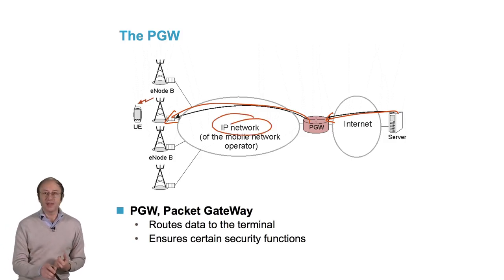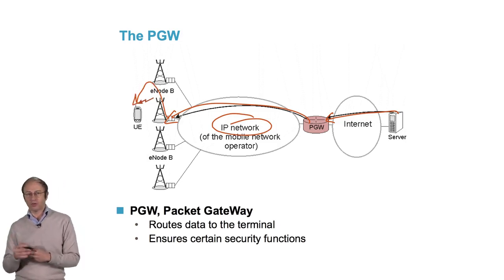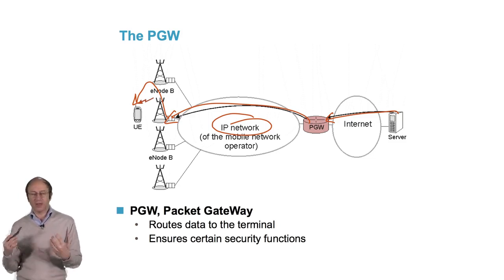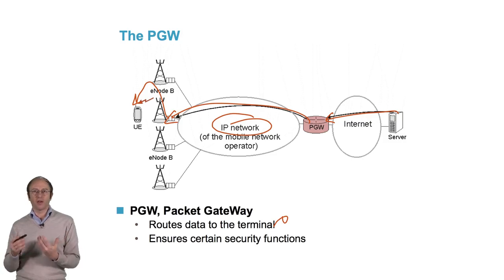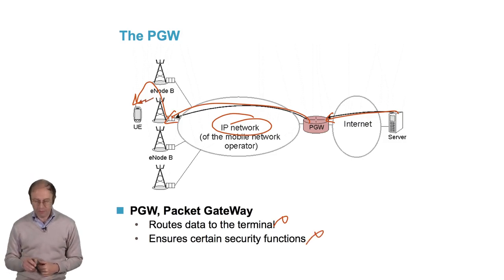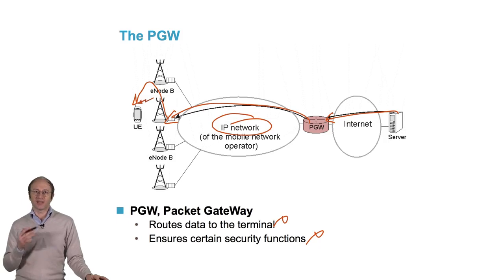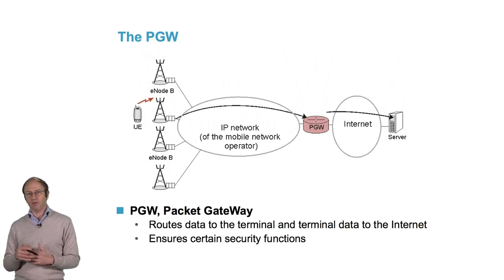And from the base station to my terminal over the radio channel. The function of the P-Gateway is to route data to the terminal and also to take care of a certain number of security functions. It's a gateway and it must be protected against attacks from outside.